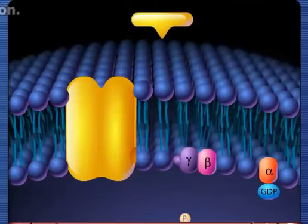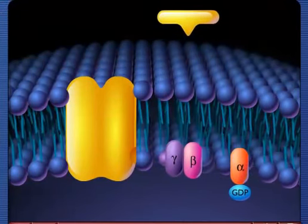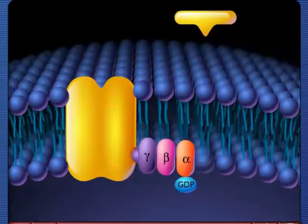The G protein subunits then recombine and attach to the receptor in the cell membrane.